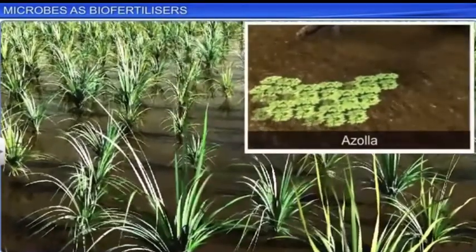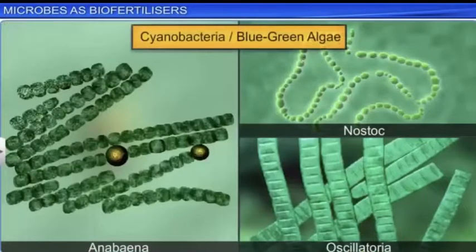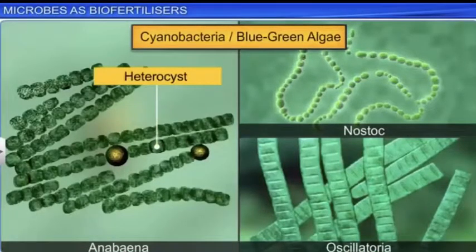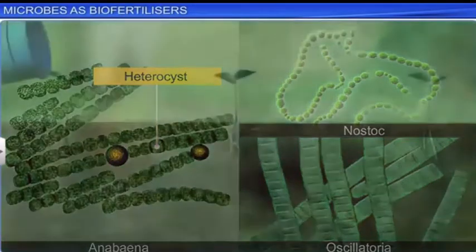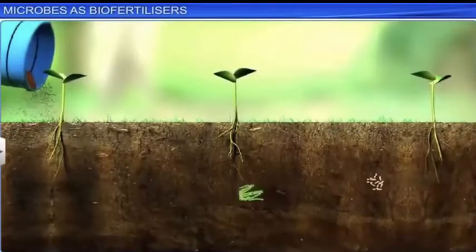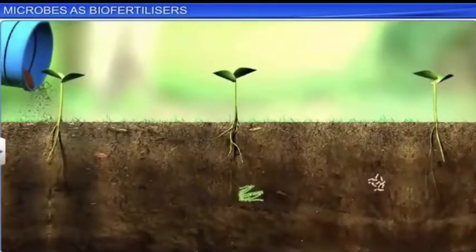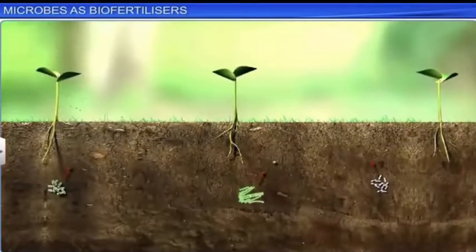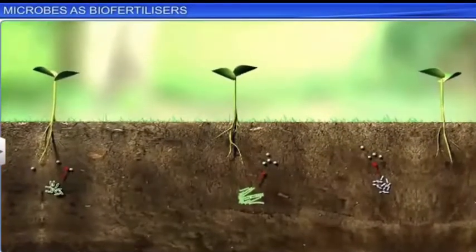Cyanobacteria, also known as blue-green algae, are photosynthetic prokaryotic organisms that serve as important biofertilizers worldwide, since they add organic matter to soil, thereby increasing its fertility.